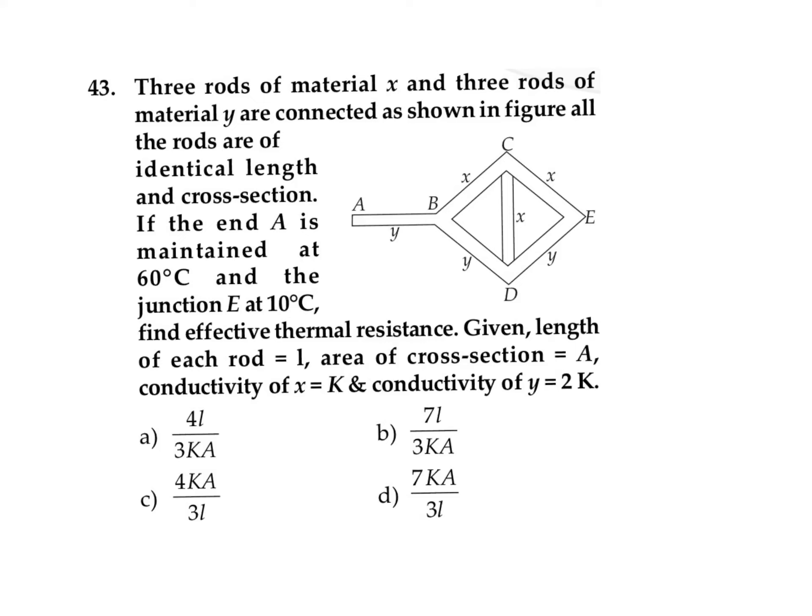In this question, three rods of material X and three rods of material Y are connected as shown in the figure. All rods are of identical length and cross-section. End A is maintained at 60°C and junction E is at 10°C. Find the effective resistance, given length of each rod is L, cross-section area is A, conductivity of X is K, and conductivity of Y is 2K.